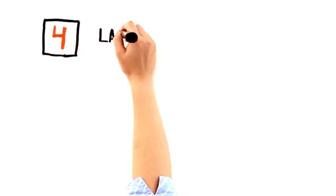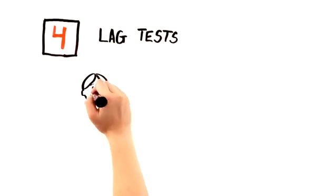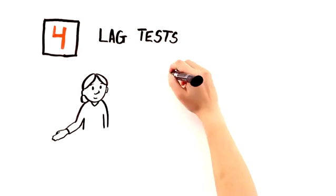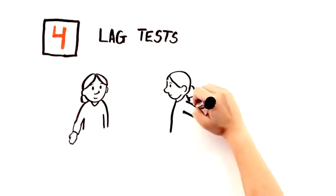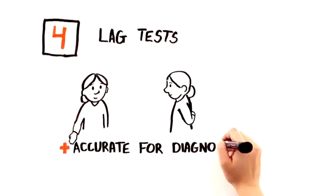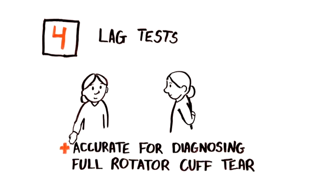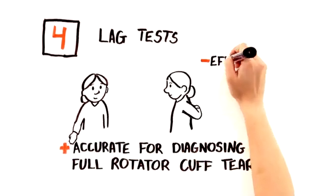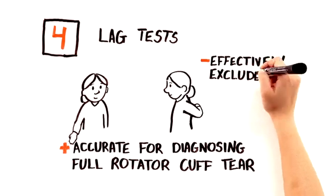Fourth, a positive lag test, where the patient cannot maintain their arm externally rotated to their side, or internally rotated behind their back, was accurate for diagnosing a full rotator cuff tear, while a negative internal rotational lag test effectively excluded a tear.